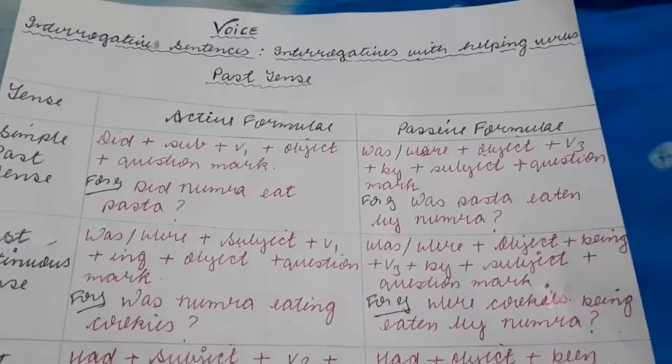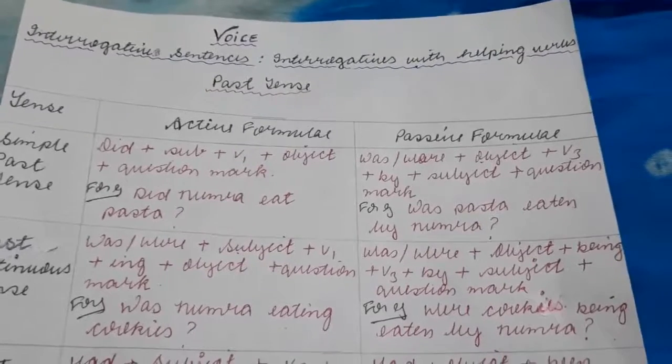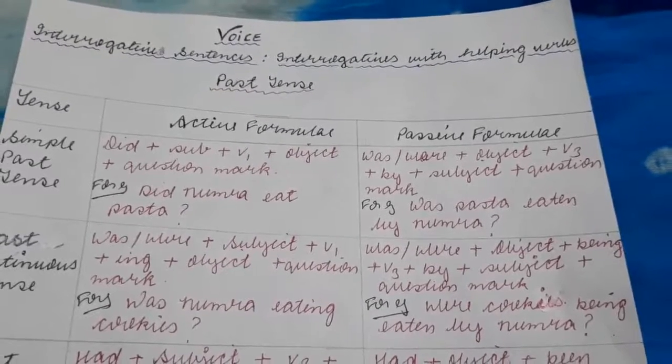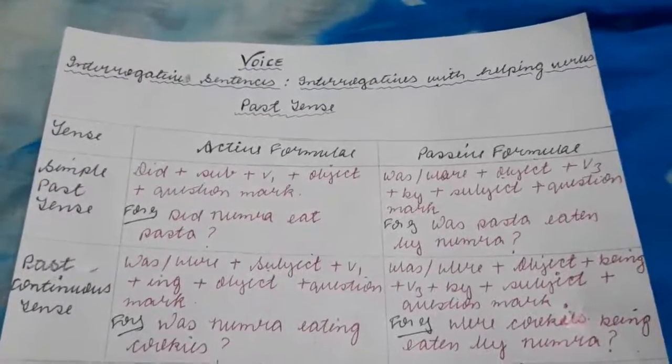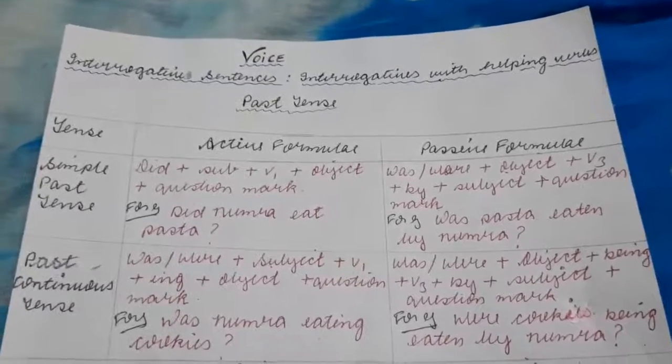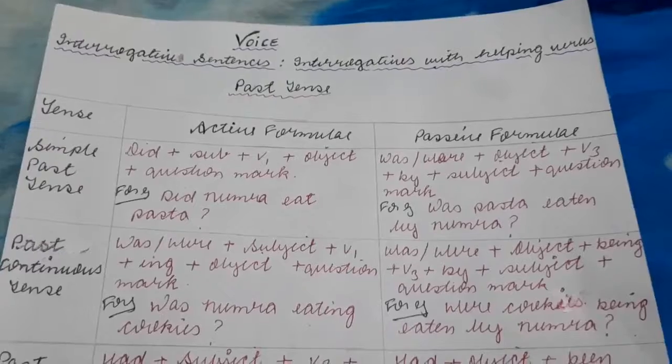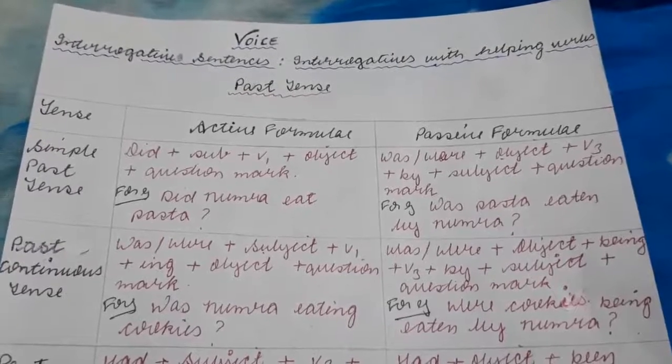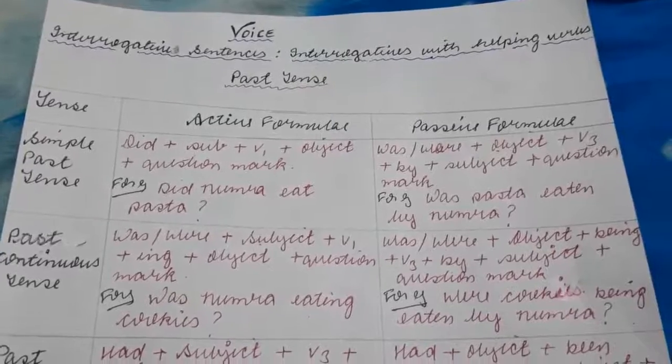Passive form: was verb plus object plus verb 3rd form plus by subject plus question mark. It's a lot more focus and remember, we always use the third form of verb. Did Numera eat pasta? Pasta is the object. So, was pasta eaten by Numera.